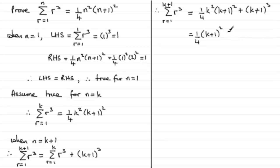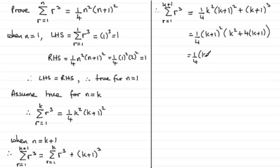I just need to factorise this now. I have a quarter times k plus 1, all squared, times a bracket. For the first term I just need k squared, and for the second term — to account for the factor of 4 — I need plus 4 times k plus 1. Let's tidy up that second bracket: we get a quarter times k plus 1, all squared, times k squared plus 4k plus 4, after expanding.